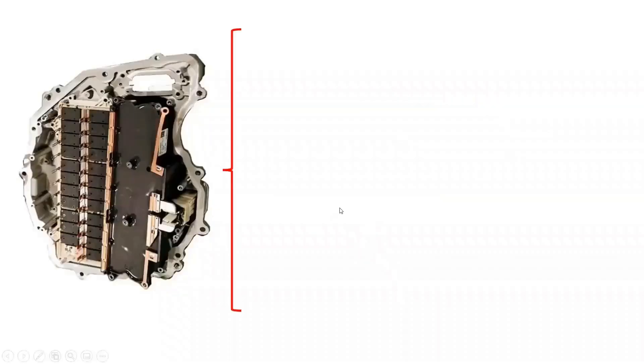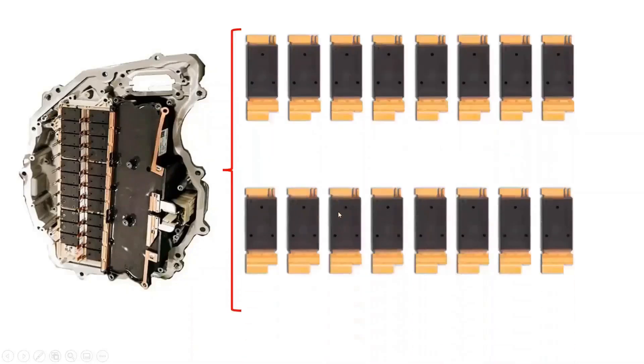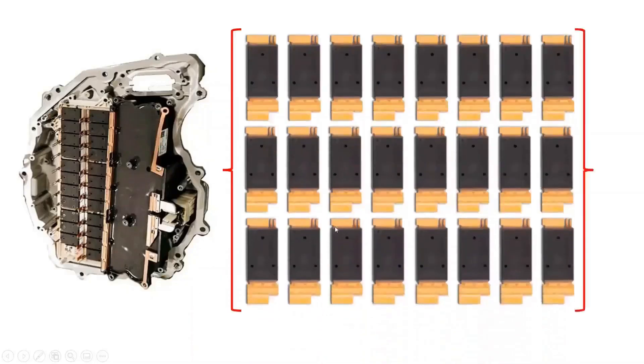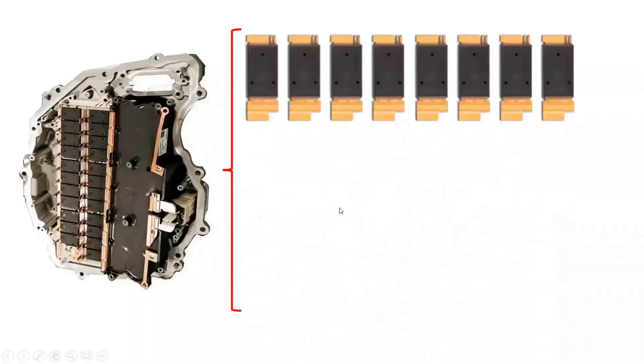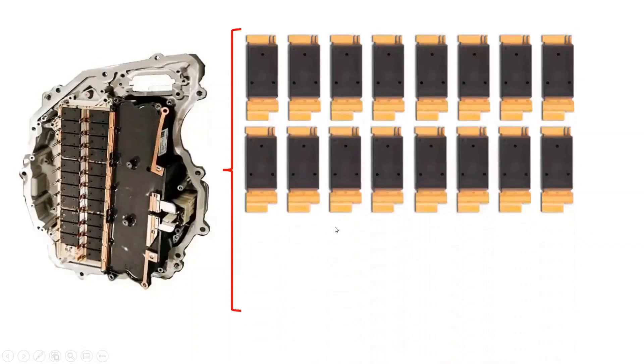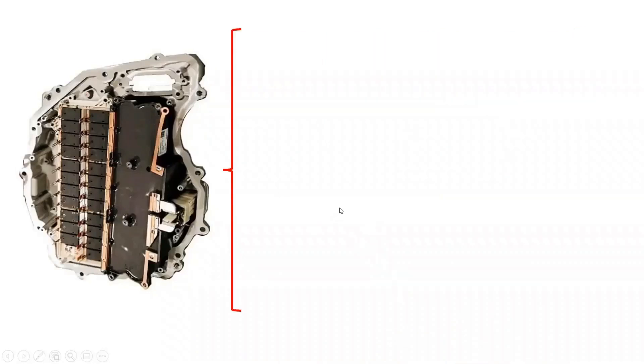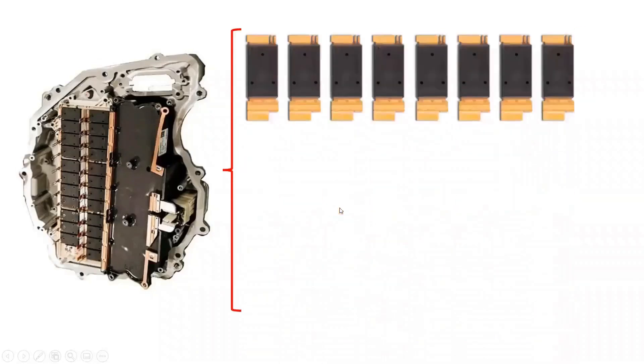Tesla Model 3 uses silicon carbide MOSFETs for its central inverter. It consists of 24 silicon carbide MOSFETs from STMicroelectronics with a custom package designed for it. Each of the silicon carbide MOSFETs is rated at 650 volts and 100 amperes.